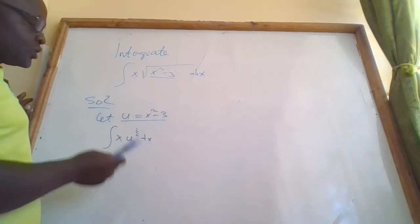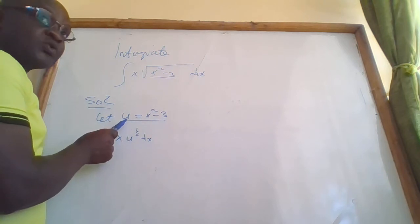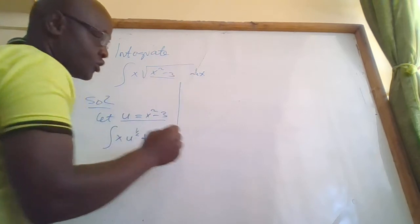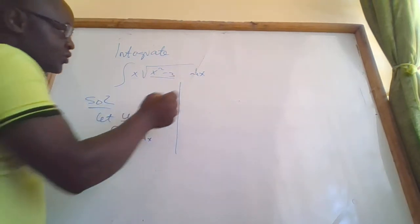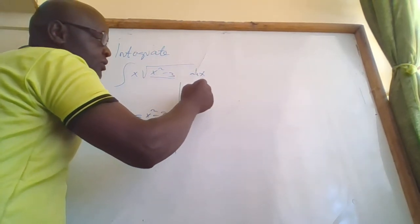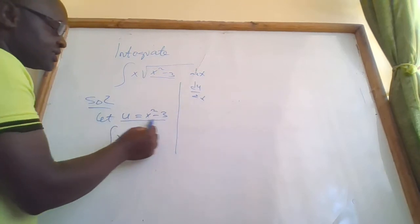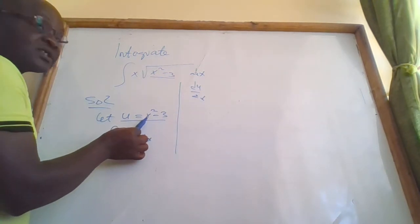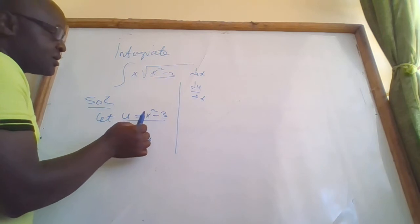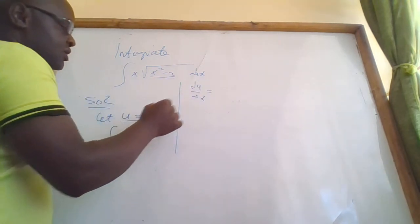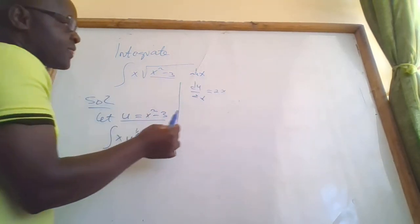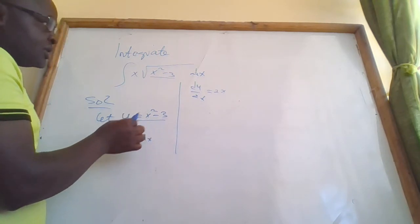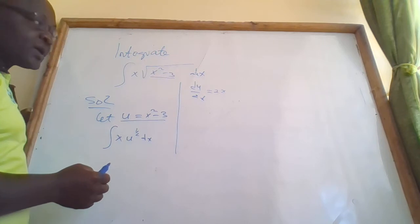So we need to differentiate u with respect to x. We get du/dx. When you differentiate x squared you get 2x, and when you differentiate a constant you get zero. Therefore du/dx equals 2x.